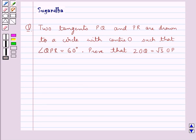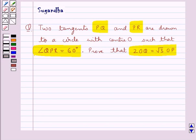Hello and welcome to the session. In this session we discuss a problem which says two tangents PQ and PR are drawn to a circle with center O such that angle QPR is equal to 60 degrees. Prove that 2 times OQ is equal to root 3 times OP. Before we move on to the solution, let's recall the RHS congruence rule.